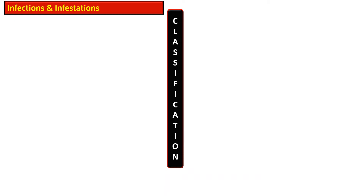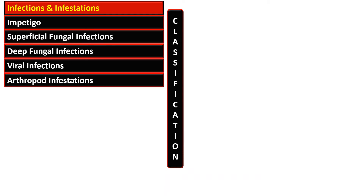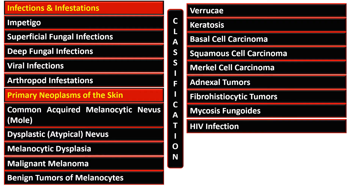The infections and infestations that are peculiar to this area are impetigo, superficial and deep fungal infections, viral infections, and arthropod infestations. The primary neoplasms of the skin are common acquired melanocytic nevus, dysplastic nevus, melanocytic dysplasia, malignant melanoma, benign tumor of the melanocytes, verrucae, keratosis, basal cell carcinoma, squamous cell carcinoma, and Merkel cell carcinoma.